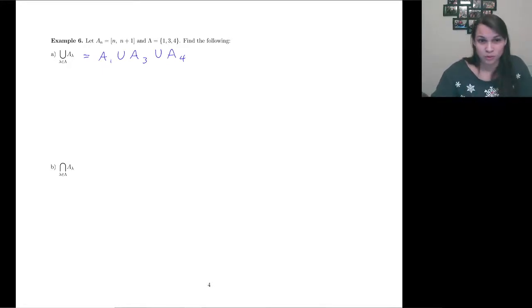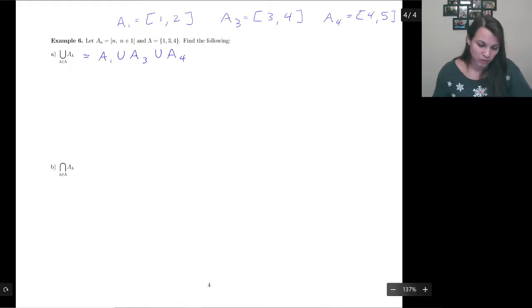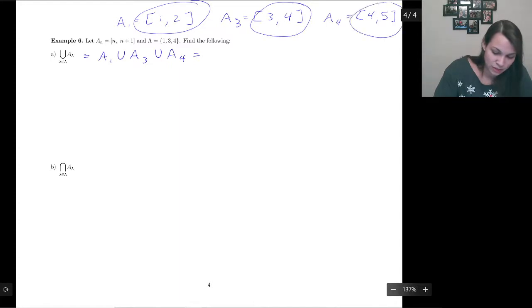So then the questions are, well, what's A_1, A_3, and A_4? So A_1 is going to be the interval one to two. A_3 is the interval three to four. A_4 is the interval four to five. So then the union is going to be this interval glued together with this interval glued together with this interval.